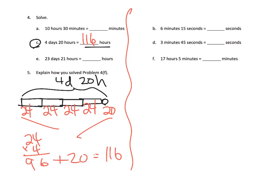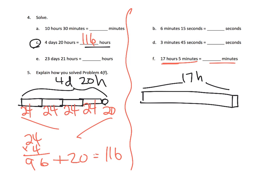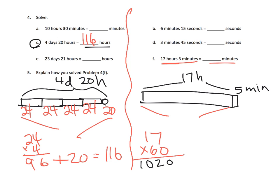And if we wanted to do question F: 17 hours and 5 minutes, and convert that into minutes. Here's our 17 hours, and right here is our 5 minutes. If we wanted to convert that whole thing into minutes, we need to take these 17 hours and turn them into minutes. So that's 17 times 60. A nice shortcut is to temporarily ignore that zero and just multiply by 6, so that's 102. Now add in that zero we temporarily ignored, so that's 1,020 minutes, plus this extra 5 minutes, giving us 1,025 minutes.